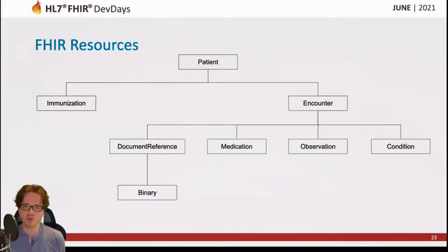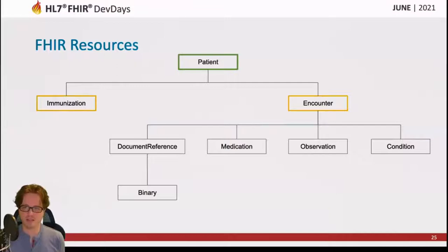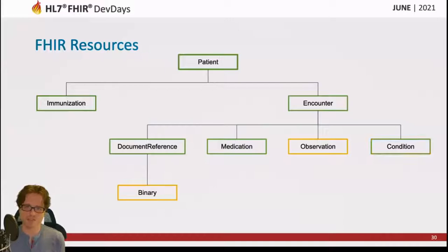We can give these resources more structure by grouping them into a tree or graph shape, which helps us think about them. At the top is patient, and under that are things we associate to the patient — encounters and immunizations. Under encounter are resources like medications prescribed during that encounter or documents created during it. And there may be even more levels — a binary, for example, needs its document reference to make sense, which in turn needs the encounter.